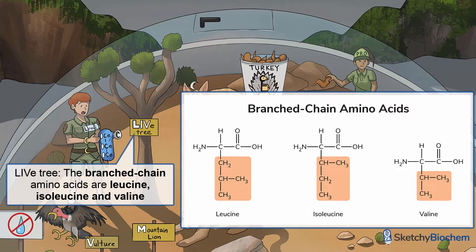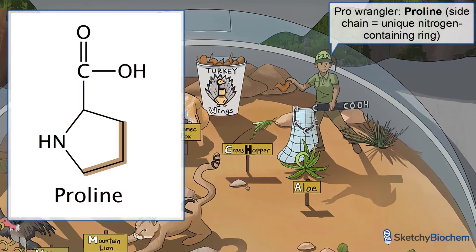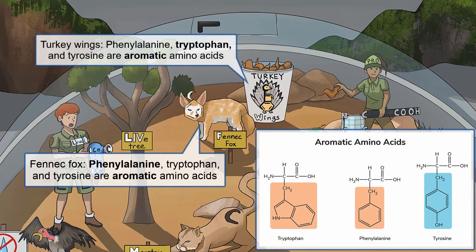L, I, and V on this branchy tree stands for the branched-chain amino acids leucine, isoleucine, and valine, respectively. We used a professional wrangler to represent proline, which has a unique side chain consisting of a five-membered nitrogen-containing ring. The cyclic structure of proline creates conformational rigidity, meaning proline is basically stuck in one position all the time. Many proline residues are found in collagen because it's important for alpha-helix formation. Phenylalanine and tryptophan, depicted by the fennec fox and turkey wings respectively, are two out of the three aromatic amino acids. Phenylalanine is actually a precursor to tyrosine. Tryptophan is needed to synthesize niacin, serotonin, and melatonin.